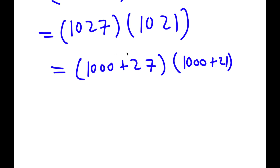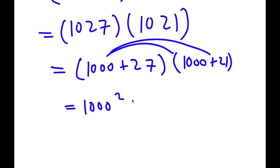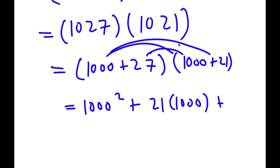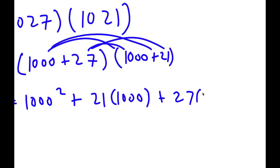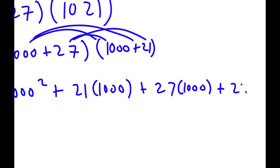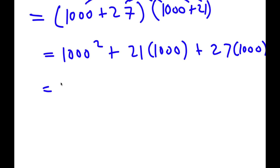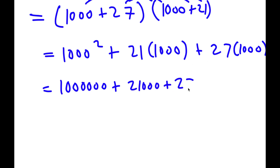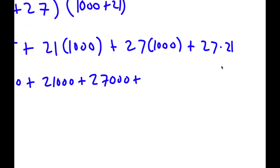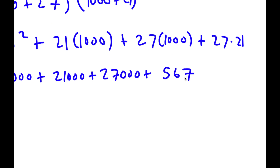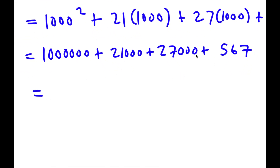To solve this, I'm going to distribute. Distributing the 1,000: 1,000 times 1,000 is 1,000 squared, plus 1,000 times 21. Then distributing the 27: 27 times 1,000 plus 27 times 21. So: 1,000 squared equals 1,000,000; 1,000 times 21 is 21,000; 27 times 1,000 is 27,000; and 27 times 21 is 567.